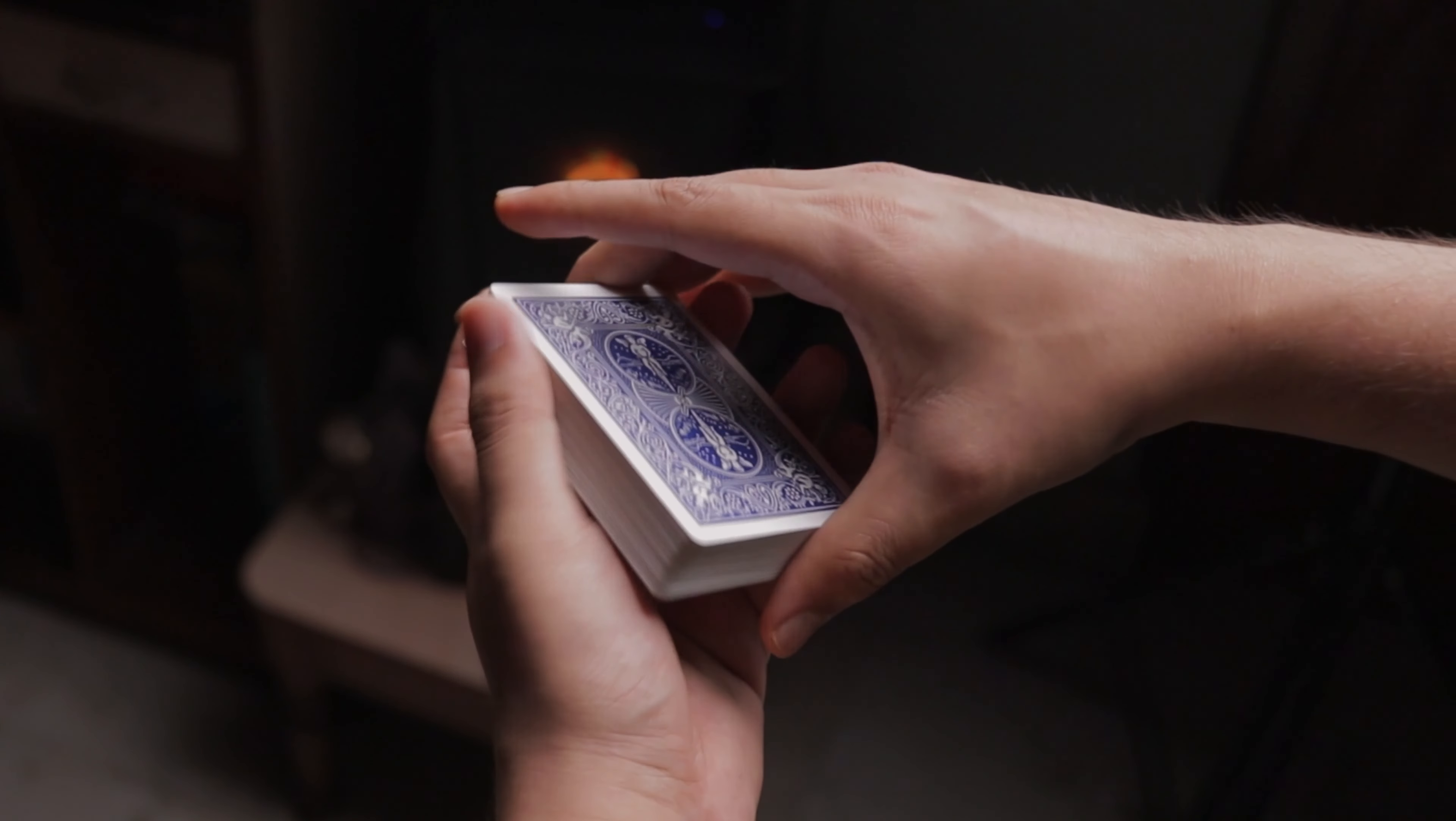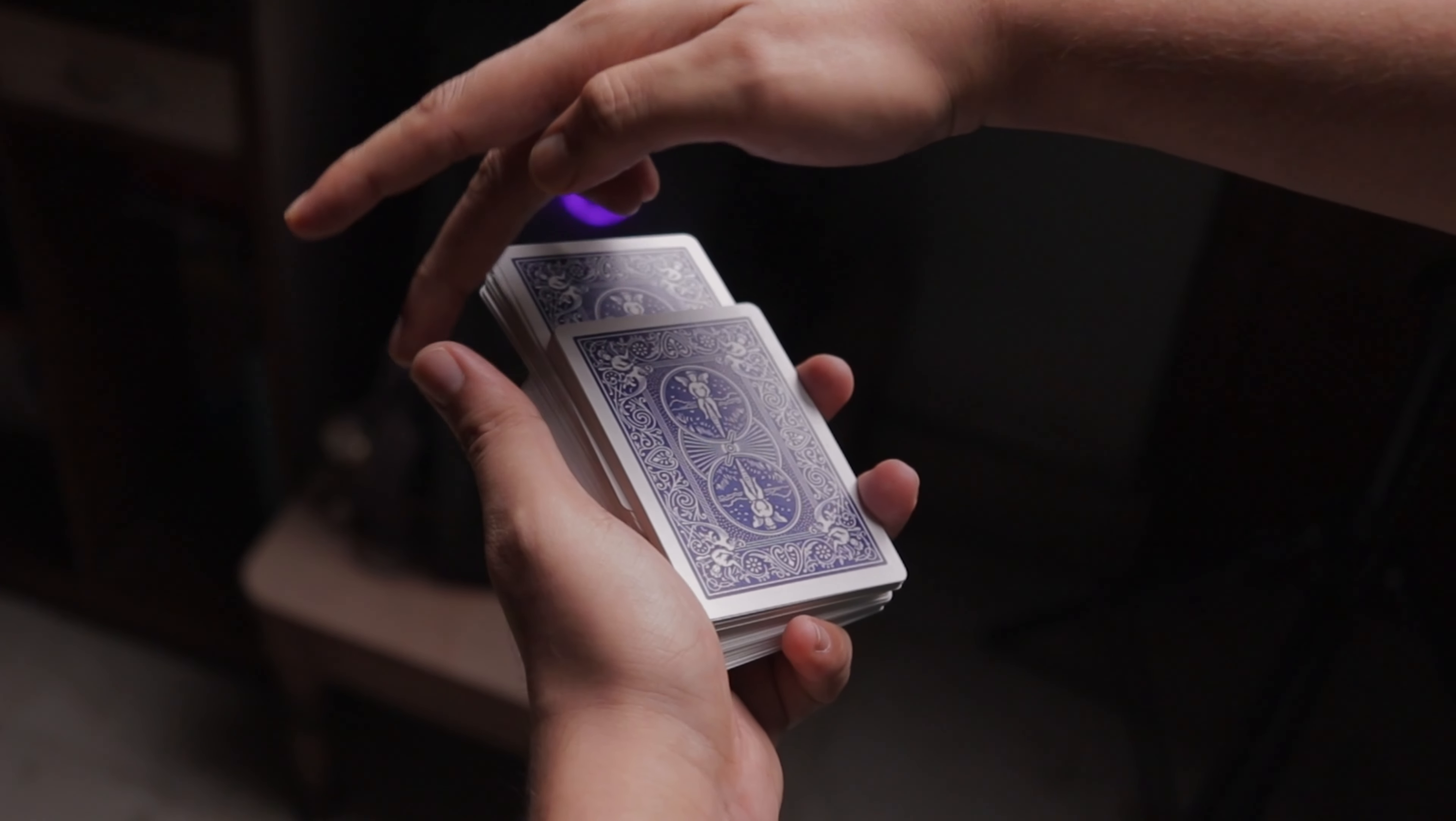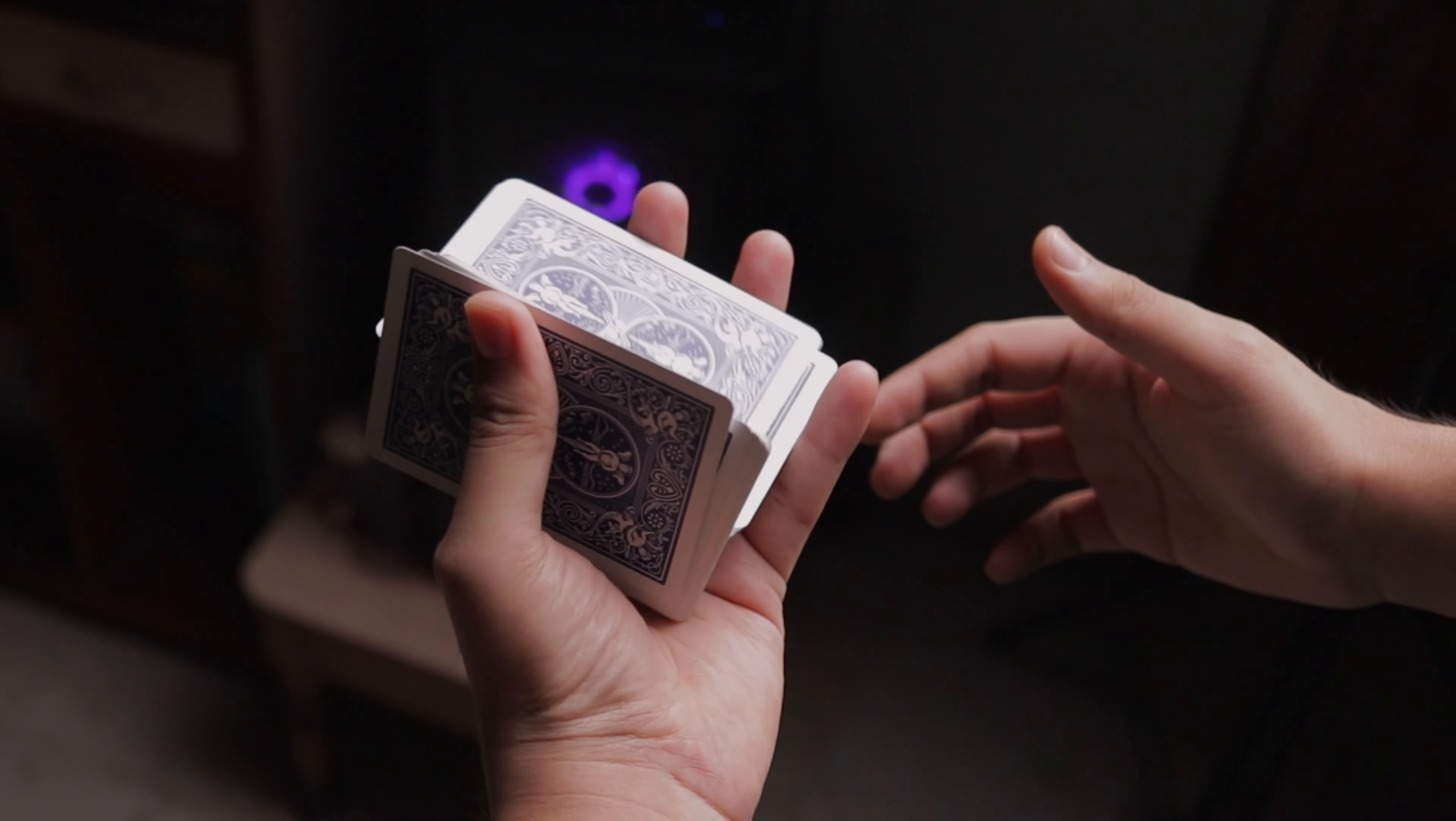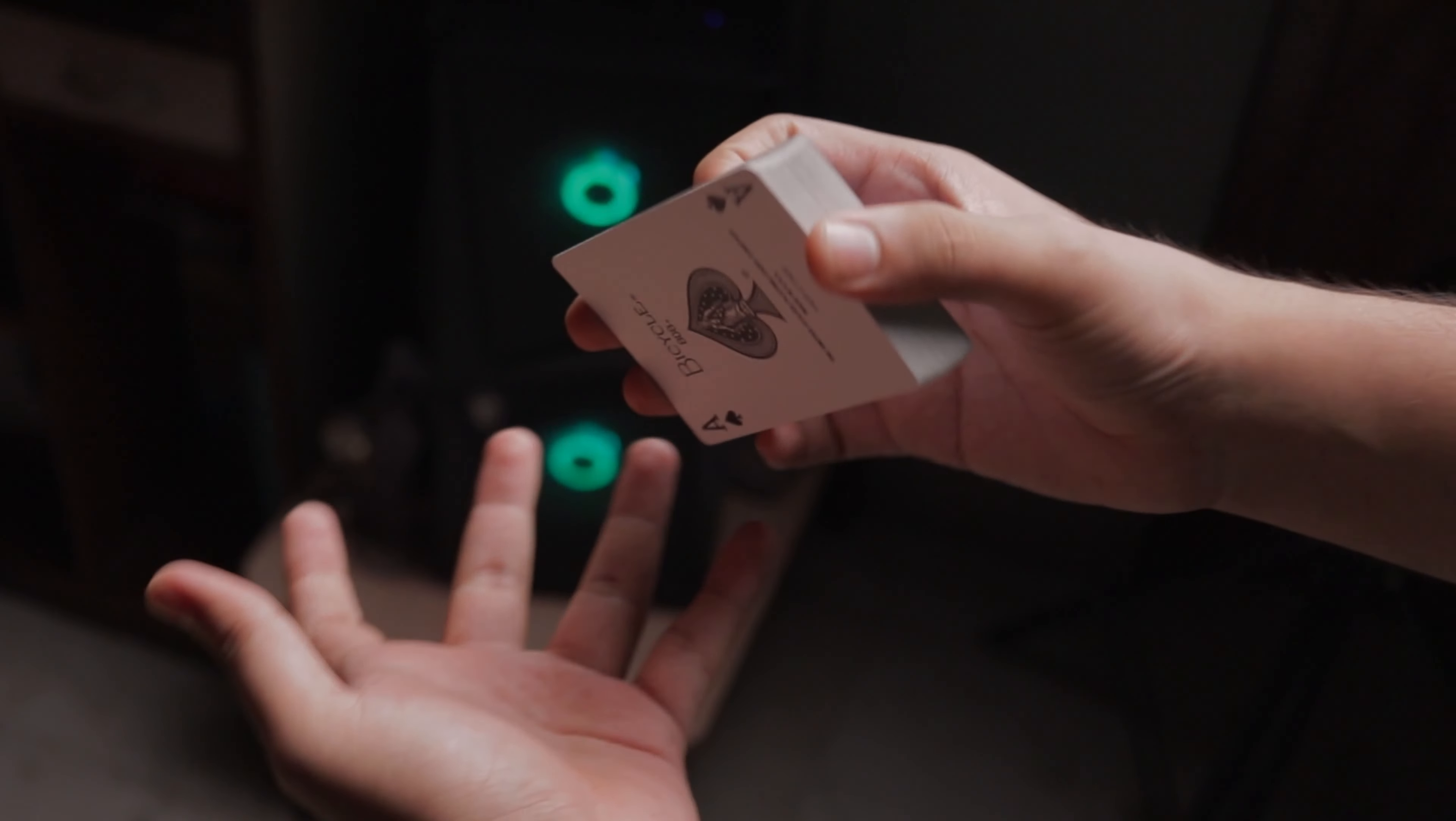You flip the middle packet on top of the top packet, and then you complete the charlier cut. So what happens eventually is, this is the order of the cards: one, two, and then three. Now the second packet comes on top of the third packet, and this top packet which needs to be on the top goes to the top because of the charlier cut. So that way you can complete this entire false cut, and that's how it's done.